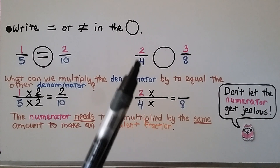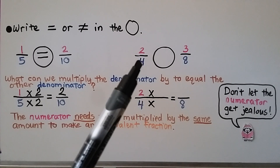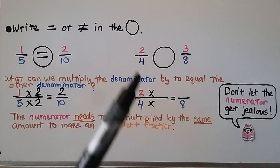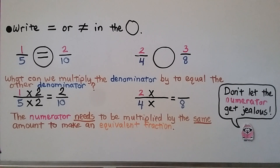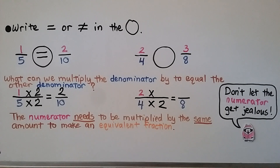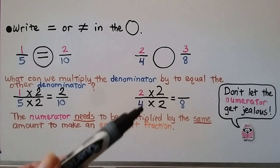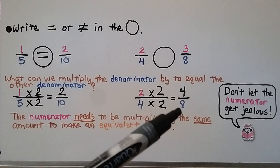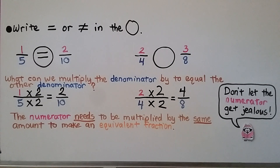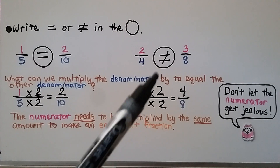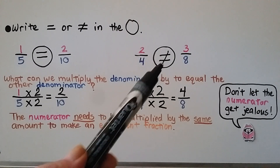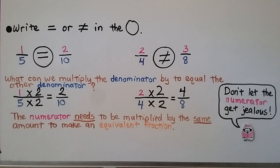Now let's look at this one: two-fourths and three-eighths. What can we multiply 4 by to equal 8? Four times two equals eight. So we think 4 times 2 equals 8. The numerator must also be multiplied by 2: two times two equals four. So two-fourths is equivalent to four-eighths, not three-eighths. This is not equal to. Just like a do-not-enter sign has a slash through it, the not-equal sign is an equal sign with a slash through it.